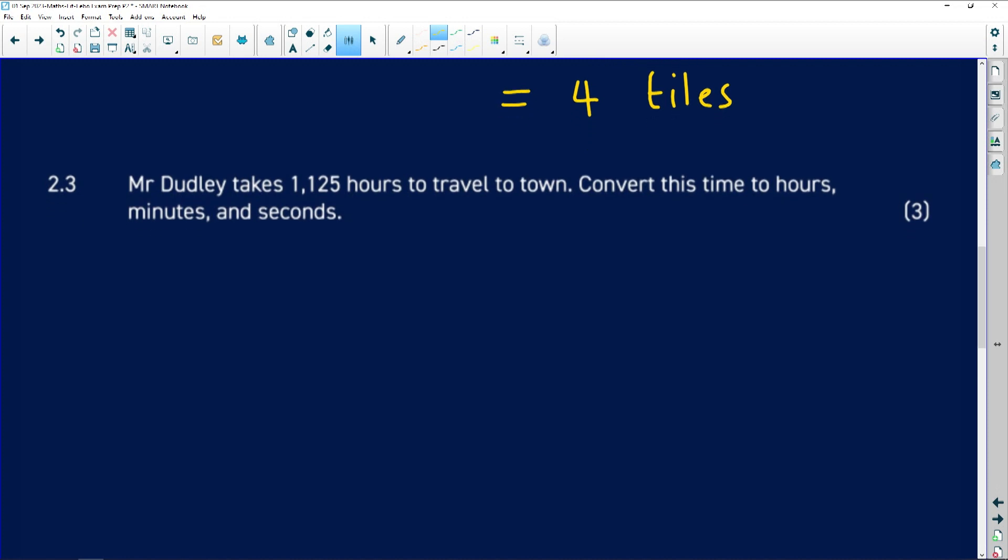And then it says to us here, Mr. Dudley takes 1.125 hours to travel to town, convert the time to hours, minutes and seconds. Stunning! Another concept that learners find very big issues with. So whenever I have my 1.125 hours. And I need to convert it to hours, minutes and seconds. I'm going to do it in those steps. Exactly. I already have my 1 hour. So I already have my 1 hour. 1 hour.